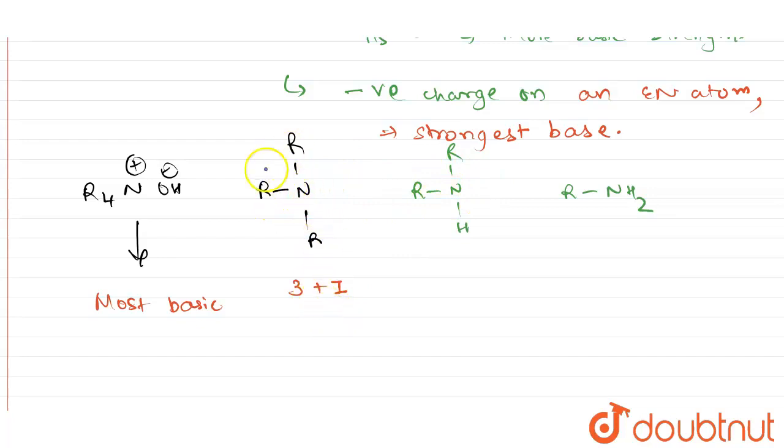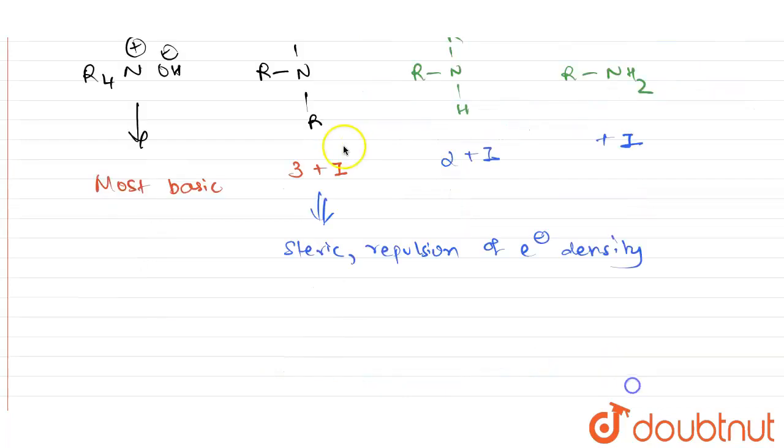But it is not the case. Why? Because due to three methyl groups, steric repulsion will take place and repulsion will happen, repulsion of electron density. And therefore, this is going to be placed after this one.